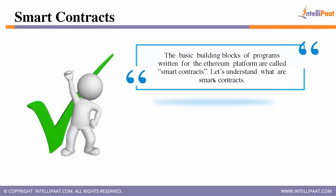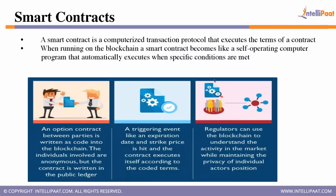Smart contracts are the basic building blocks of programs written for the Ethereum platform. A smart contract is a computerized transaction protocol that executes the terms of a contract. When running on the blockchain, it becomes a self-operating computer program that automatically executes when specific conditions are met — in our example, the date and the weather.